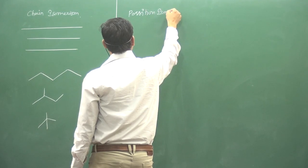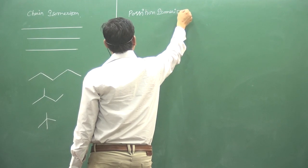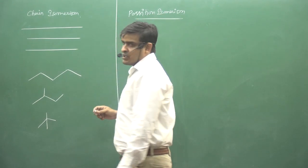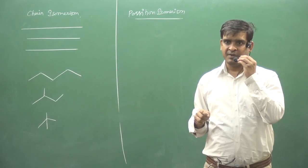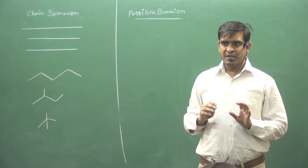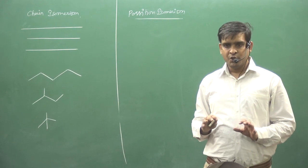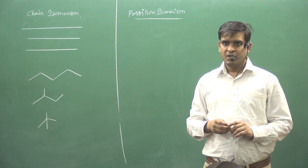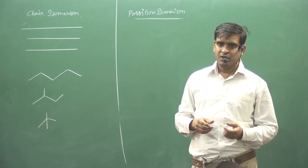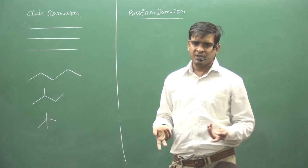Position isomers. Kya hai position isomers? Two or more than two compounds having same molecular formula but different structure formula due to different positions of locant, yaani substituent.